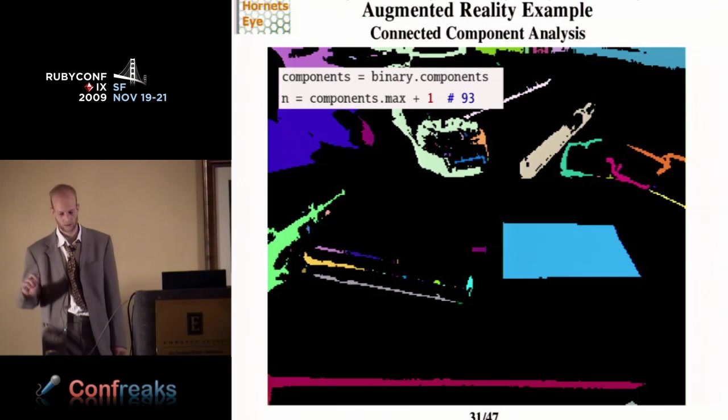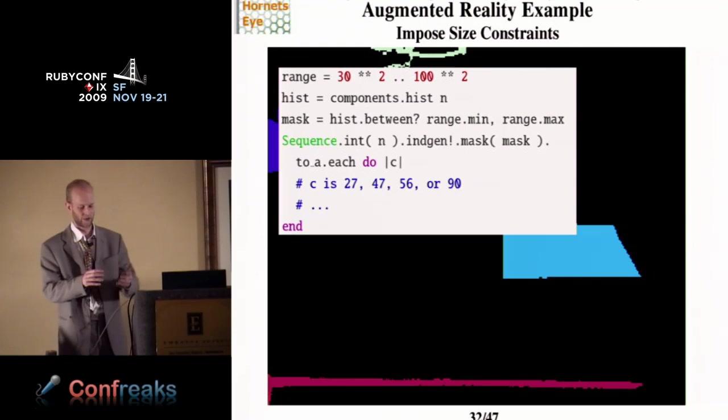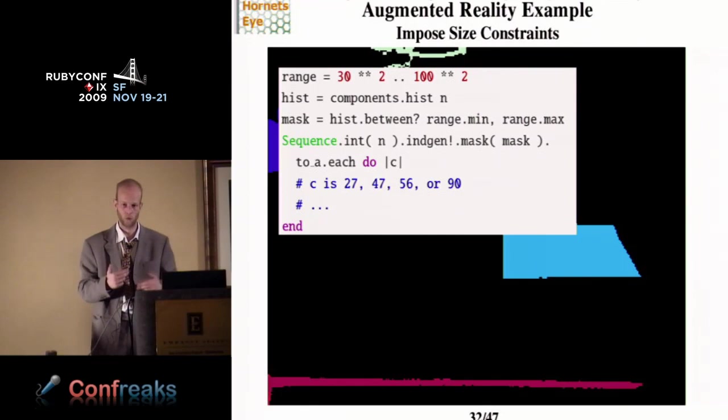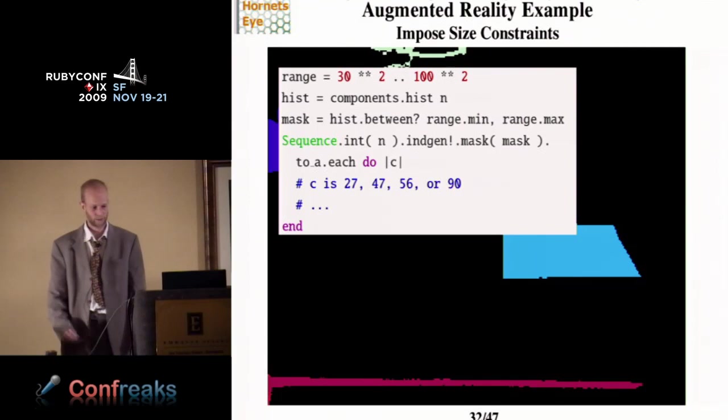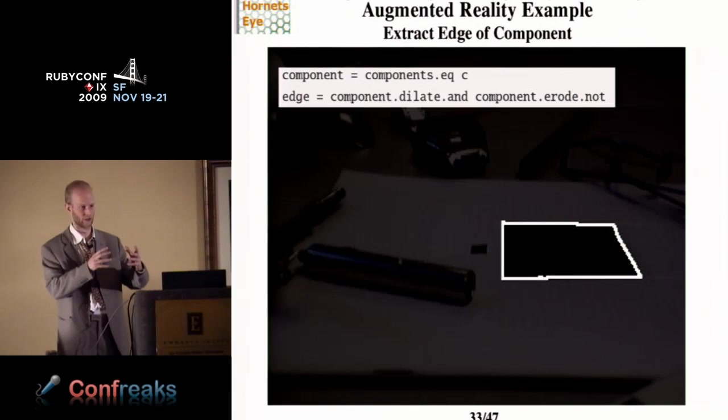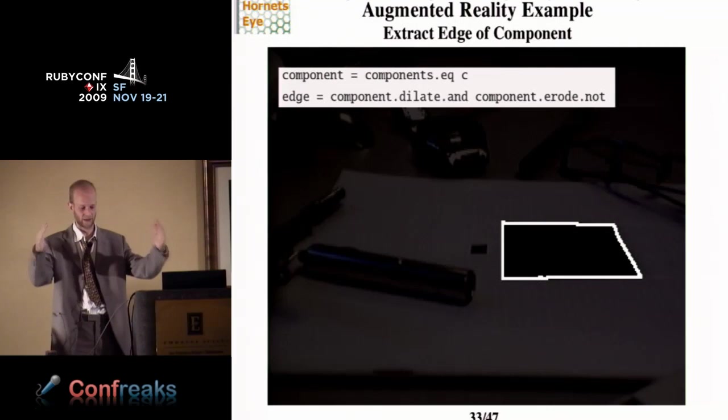So you set N to the maximum index of the component image plus one. And then we create a histogram of the components. This will give us the area of each component. And then we create a mask, a binary mask to filter for the components which have a size which is within the acceptable range. And then I create an index array. Select just the indices which I'm interested in using the mask. Convert it to a Ruby array and then I can loop over the indices. So I'm now looping over the remaining components which are not too small and not too big. And C is the loop variable.